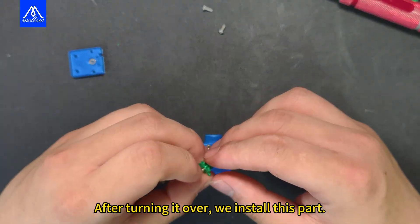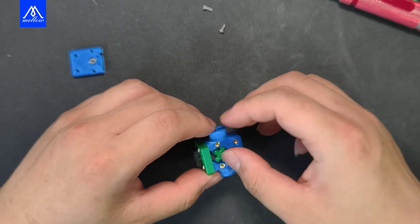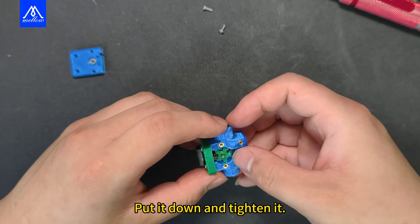After turning it over, we install this part. This is the one we just installed with a rubber ring. We put it down and tighten it.